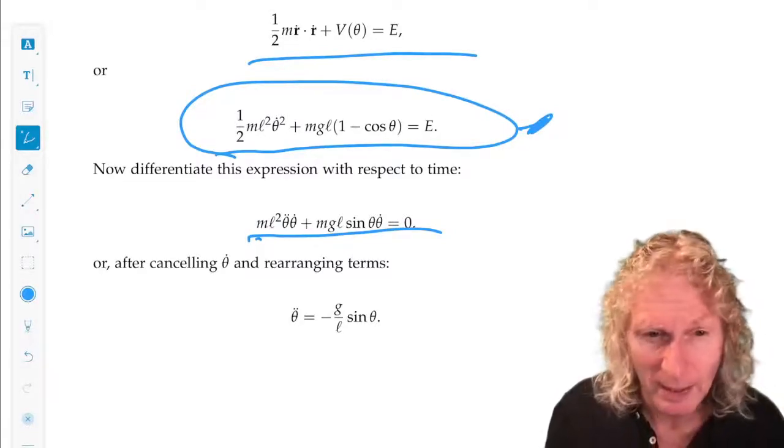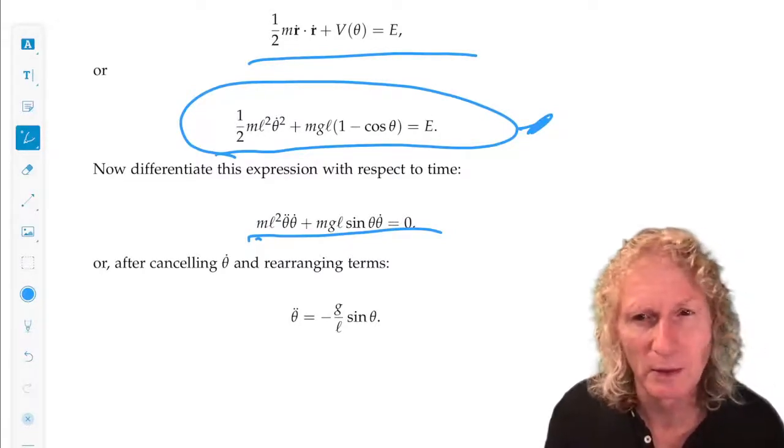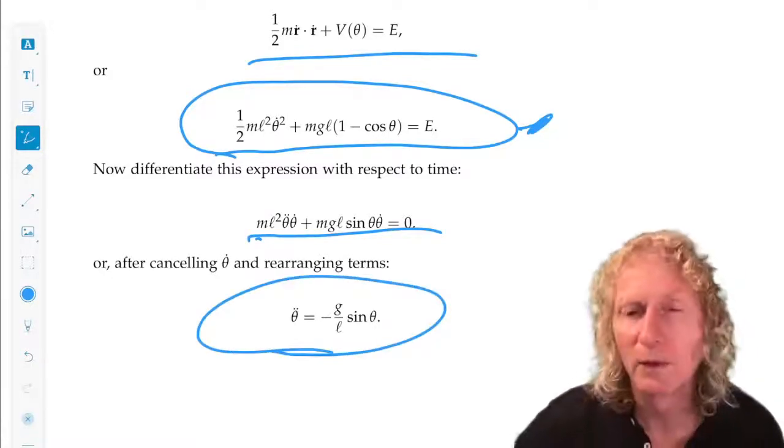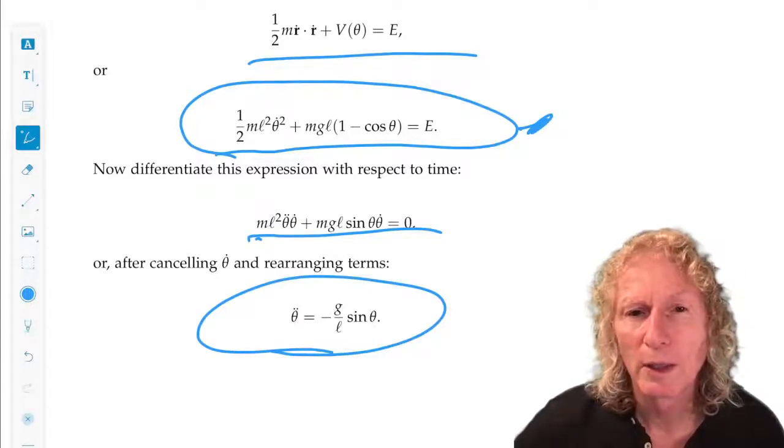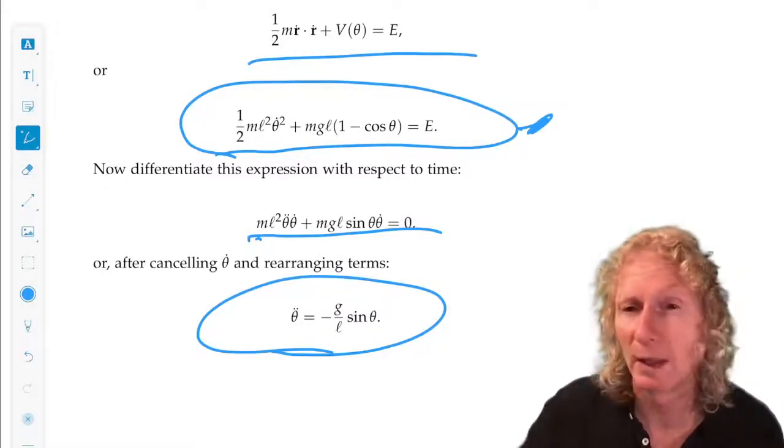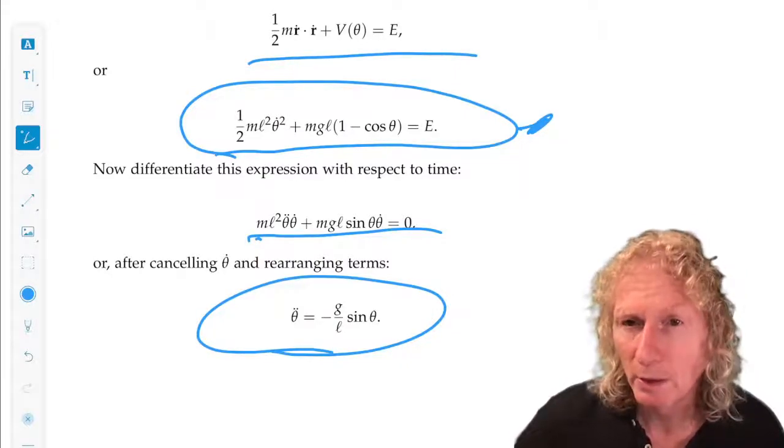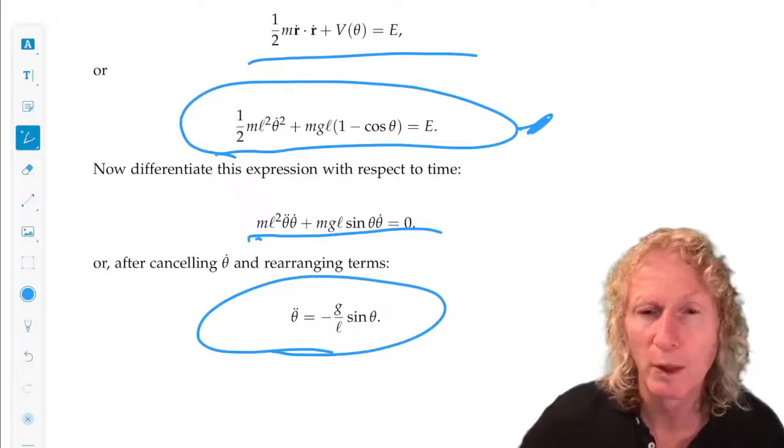And we get this. We can pull theta dot out. We've seen calculations like this earlier. And we get this wonderful equation. Theta double dot equals minus G over L sine theta. This is the equation of motion for a pendulum, as I've just described, a one-dimensional pendulum.